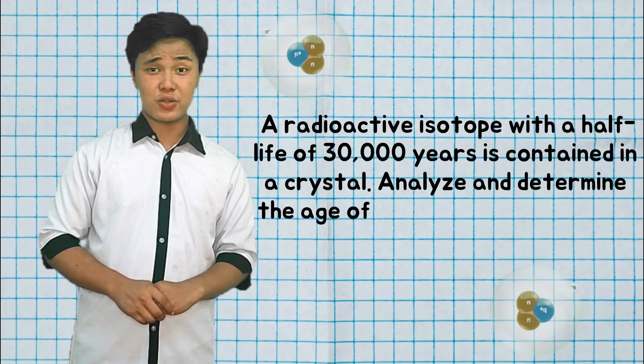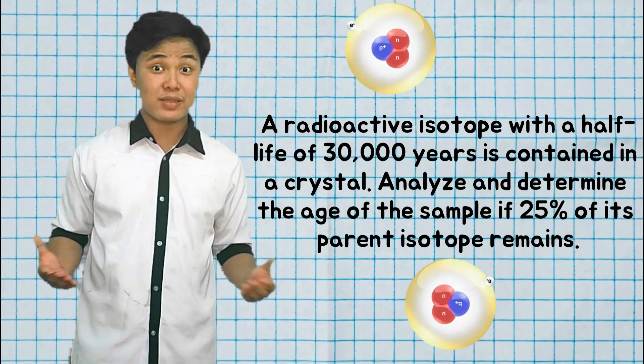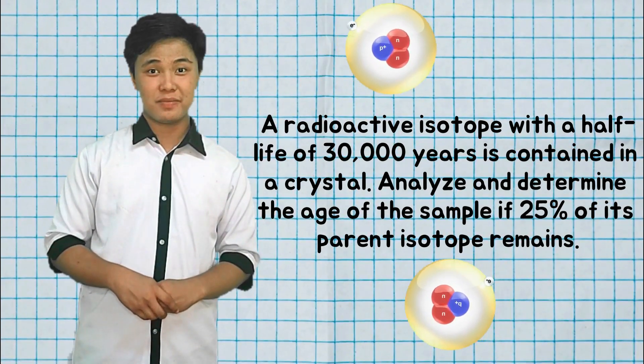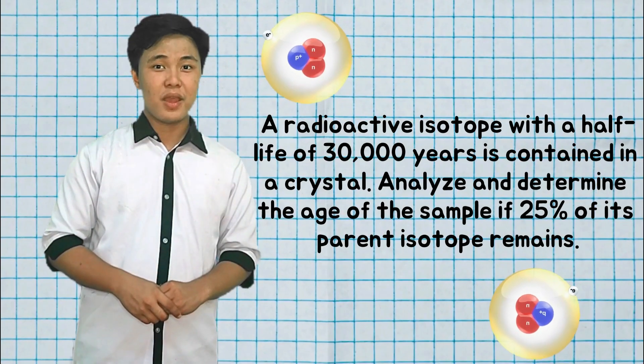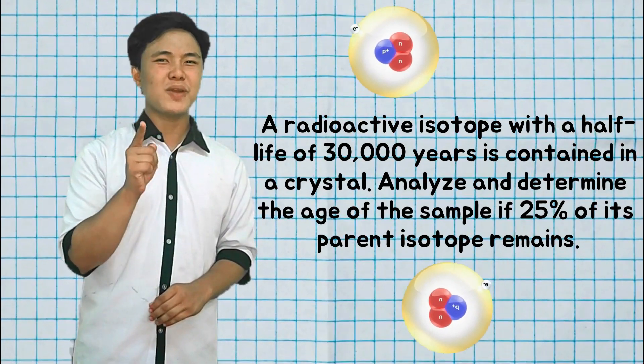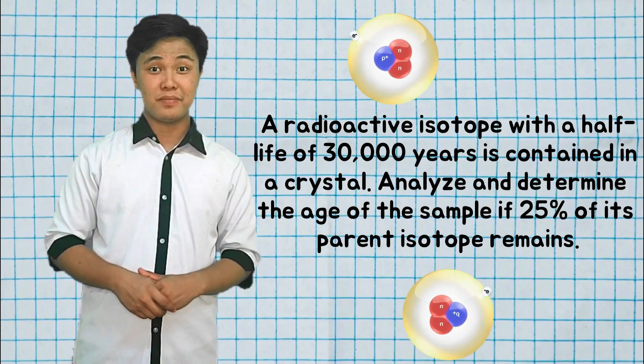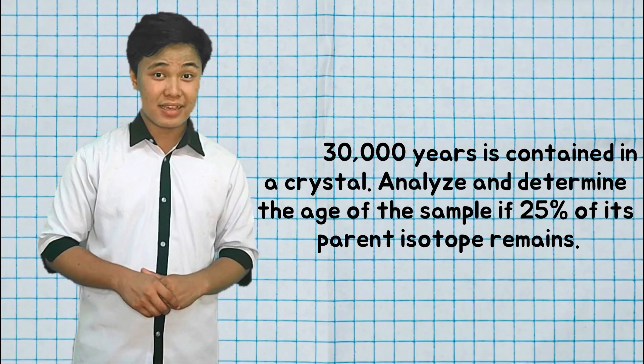Let's look at an example for better understanding of what we've discussed about geologic time. A radioactive isotope with a half-life of 30,000 years is contained in a crystal. With that given data, I want you to analyze it and determine the age of the sample, if 25% of its parent isotope remains.